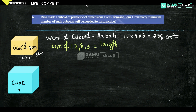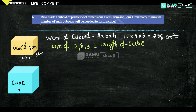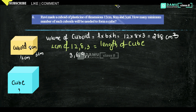Why? Because we need the least common length that can be occupied by this cuboid. So for 3: 3, 6, 9, 12, 15, 18, 21, 24. For 8: 8, 16, 24. Stop there.